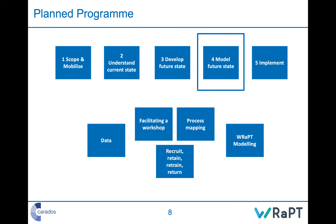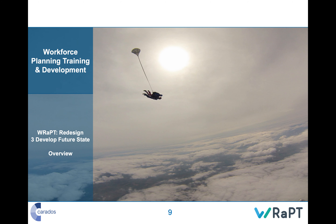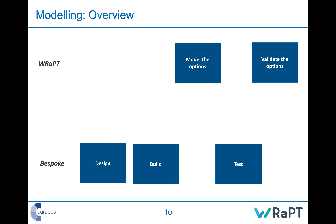Modelling the future state fits here in the process, and WRAPT modelling will be a separate course. In WRAPT we have two steps: model the options and validate the options. But if you're going to do a bespoke model, you also need to think through design, build and test. At the design stage, you need to understand the data you'll use, what outcomes you want, and what analysis is required to drive the change — for example, whether to use activity information to drive workforce changes.